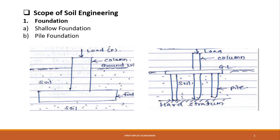First, we will see shallow foundation. The shallow foundation is one where the depth at which the foundation is placed is less than its width. So if this is your ground condition, the depth of your foundation is measured below ground level, and if that depth is less than the width of the foundation, that type of foundation is called a shallow foundation.